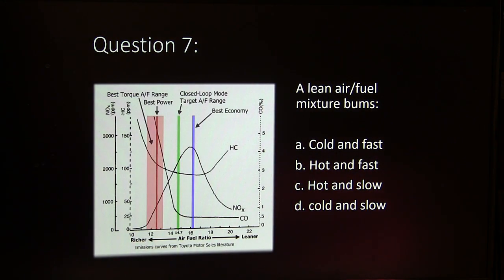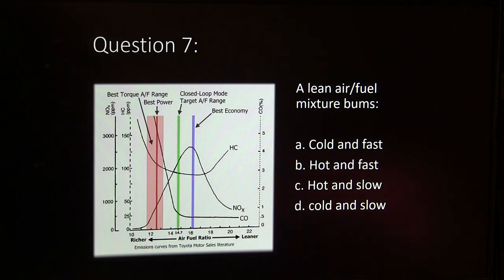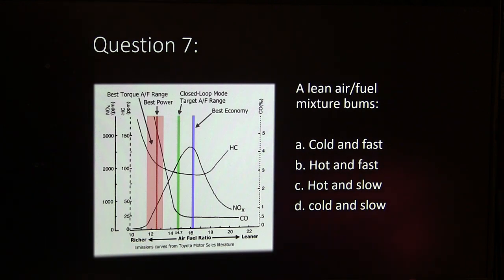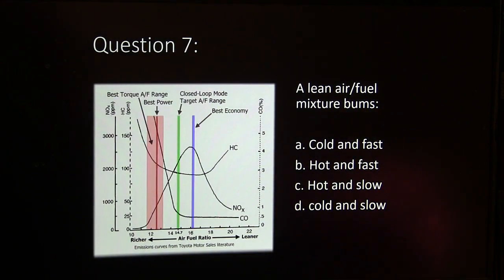Question 7. A lean air fuel mixture burns — and I meant to put 'burns' there. A, cold and fast. B, hot and fast. C, hot and slow. Or D, cold and slow.